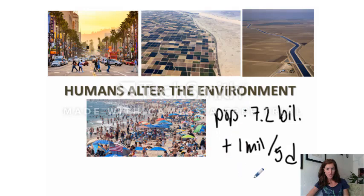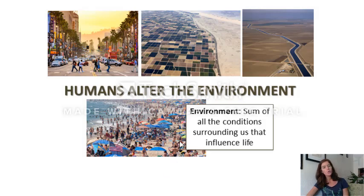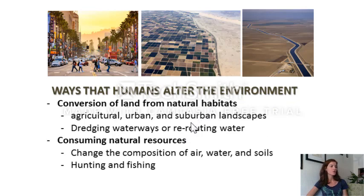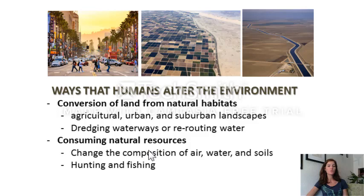In this class we are going to be talking about humans and the environment. The environment is the sum of all the conditions surrounding us that influence life. Here are some ways that humans alter the environment: we change habitats to agricultural, urban, and suburban landscapes; we dredge waterways or reroute water; we consume natural resources. Every living thing requires resources to live, but in doing so we also change the composition of a lot of the resources around us.